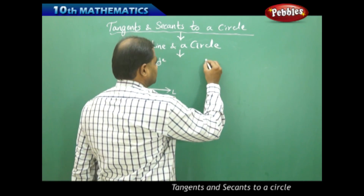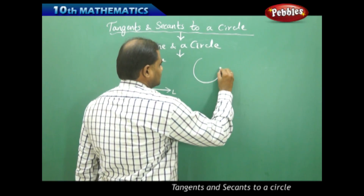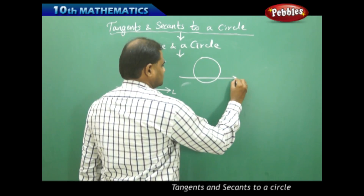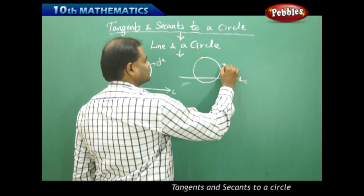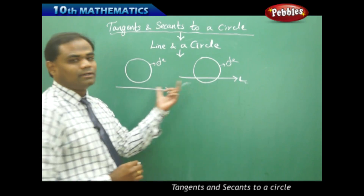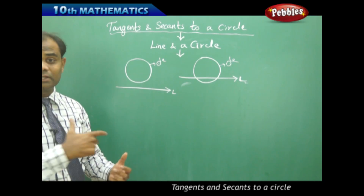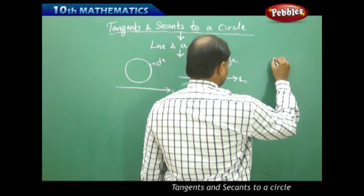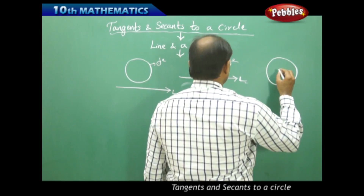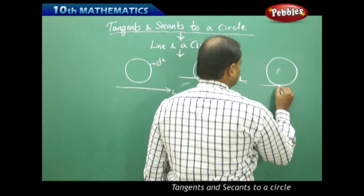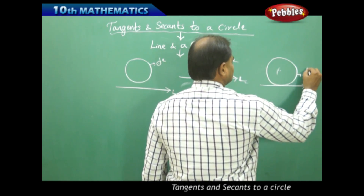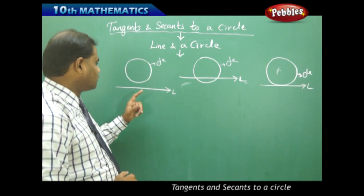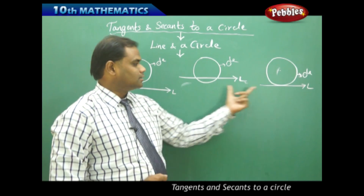The second case is where I have a circle and a line which cuts the circle. Here the line cuts the circle; in the previous case the line does not cut the circle. The third possibility is that a line touches the circle. So we have three cases: the line cuts the circle, does not cut it, or touches it.